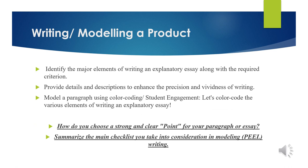After focusing on presenting and practicing, we're going to model the product itself — writing and modeling a paragraph. We'll identify the major elements, provide details and descriptions to enhance the elements of our writing, and model a paragraph using color coding in which students engage with the various elements of writing an explanatory essay. We'll close by asking: How do you choose a strong and clear point for your paragraph or essay? And summarize the checklist we take into consideration in modeling real writing itself.